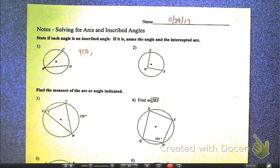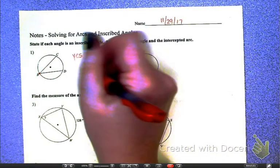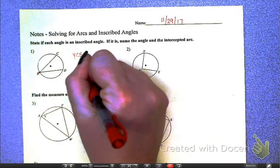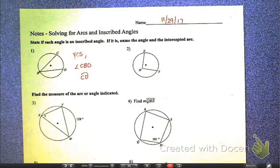So if it's an inscribed angle, we need to name that angle. Can someone name that angle? CBD works. We also need to name its intercepted arc. Well, what is an intercepted arc? Okay, so CD is our intercepted arc. Someone know the definition of it? An intercepted arc. The arc that the inscribed angle creates. That is our normal layman's terms vocab. Okay, it's not our fancy vocab, but it works perfectly. It is the arc that your inscribed angle makes.